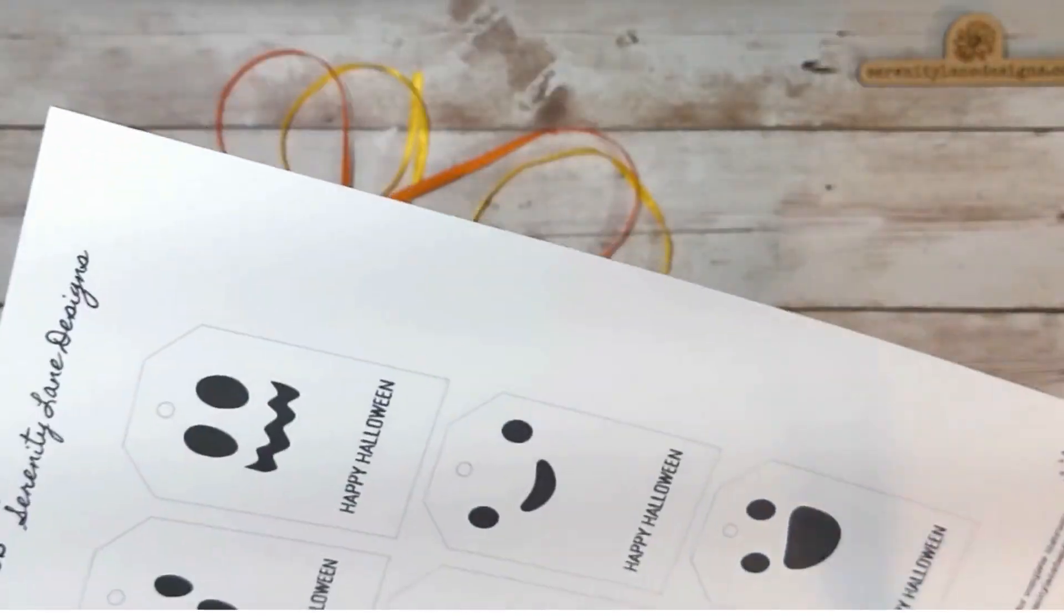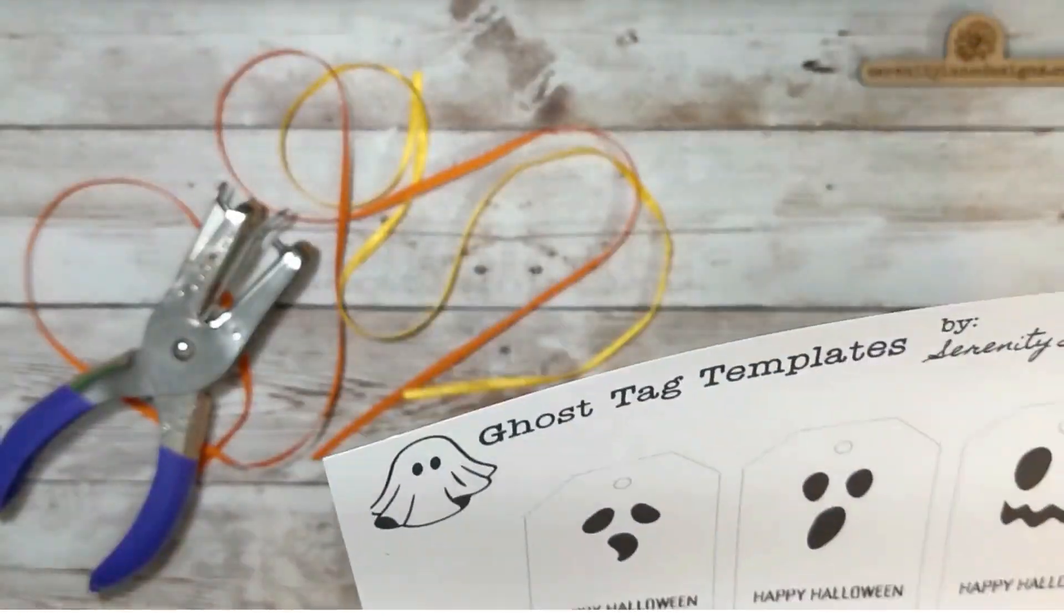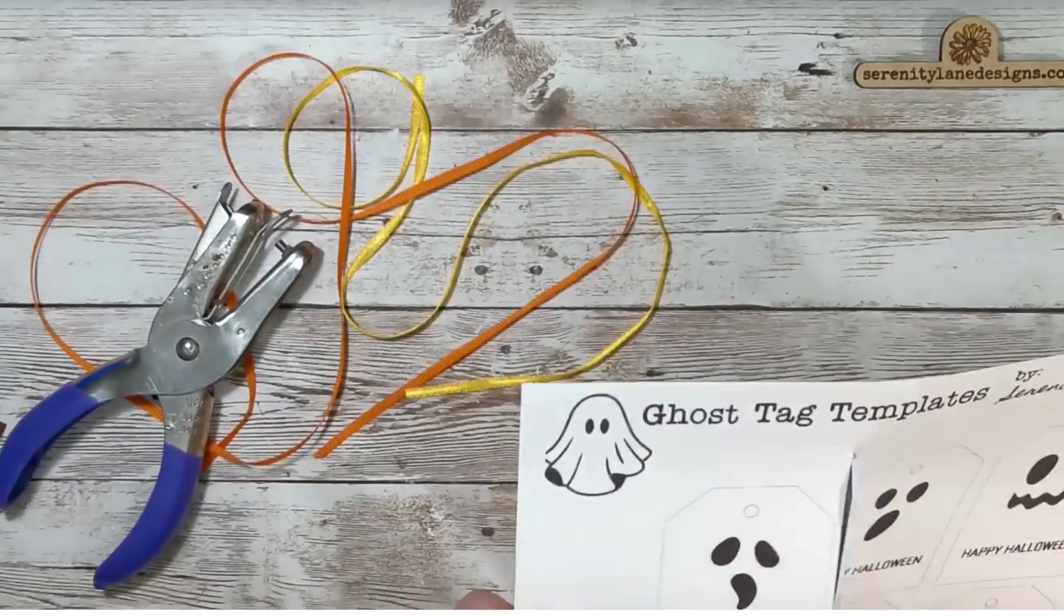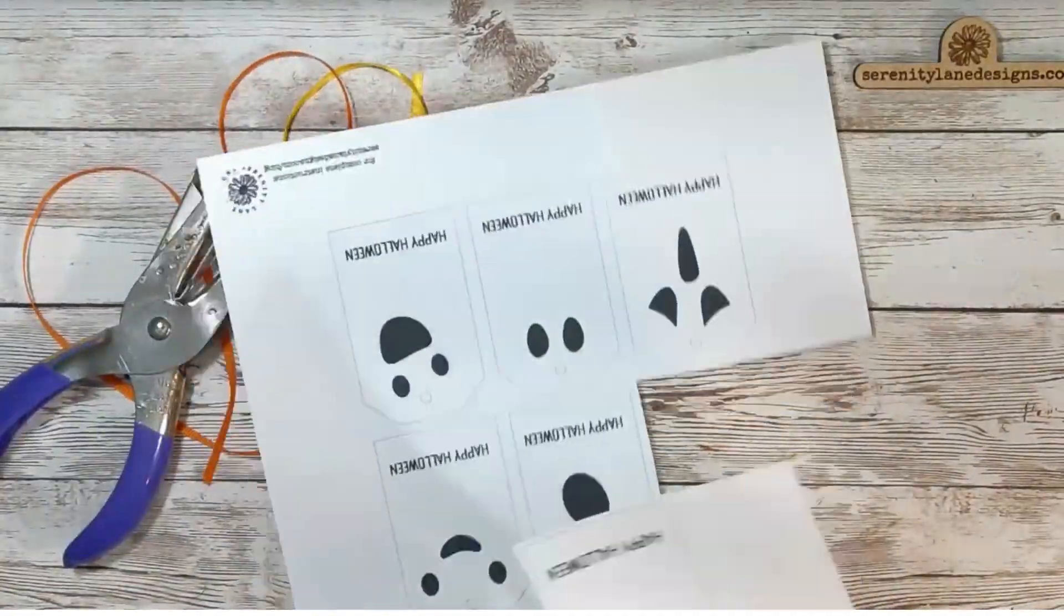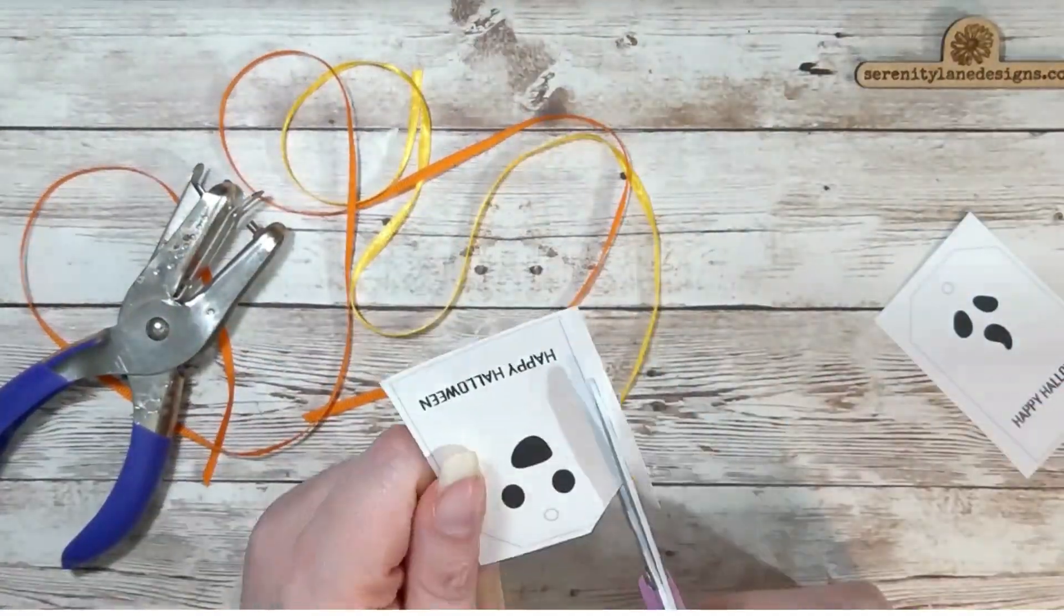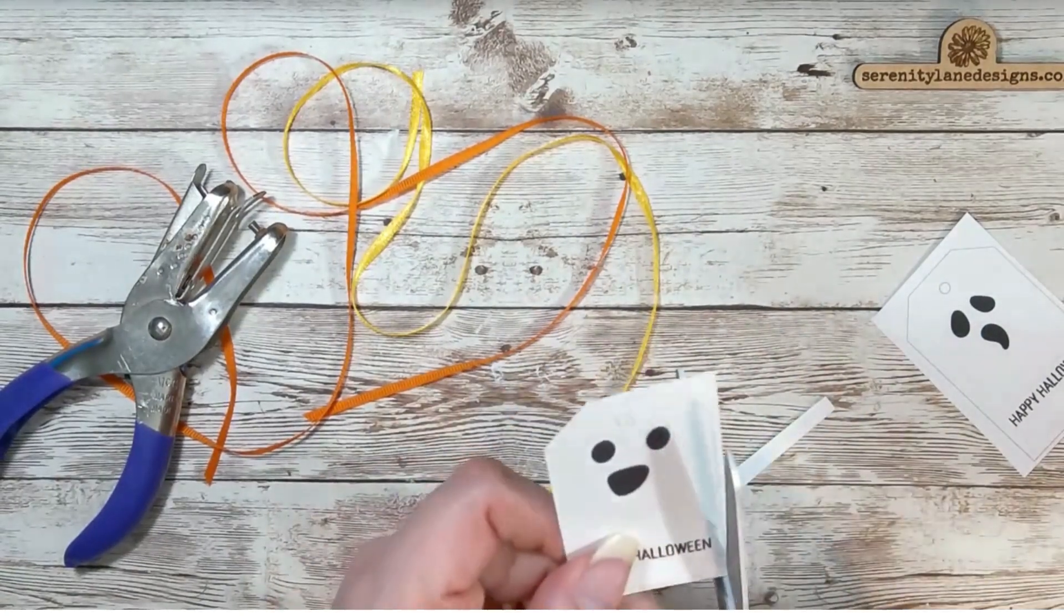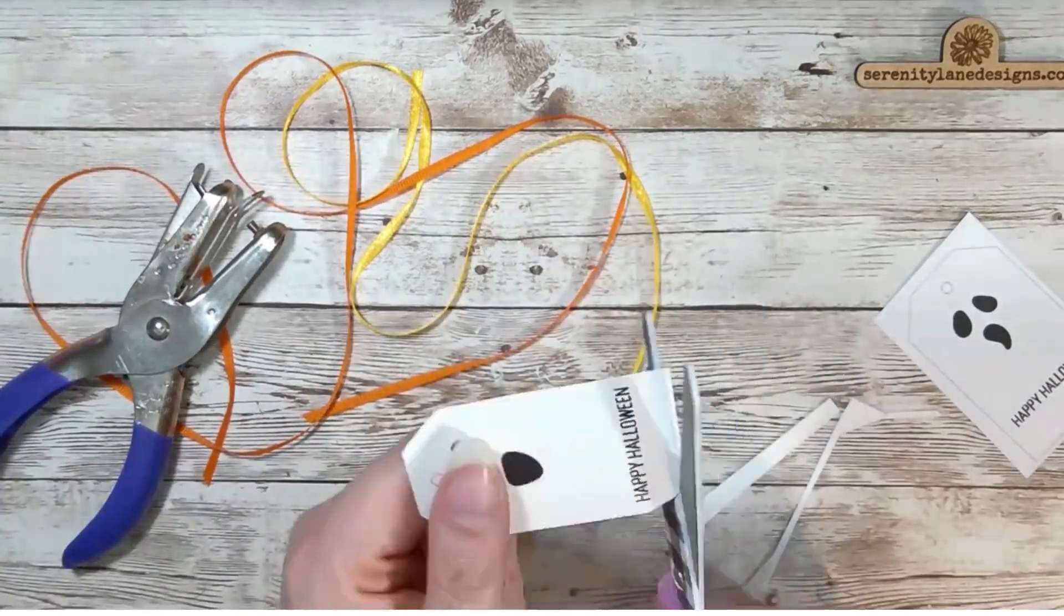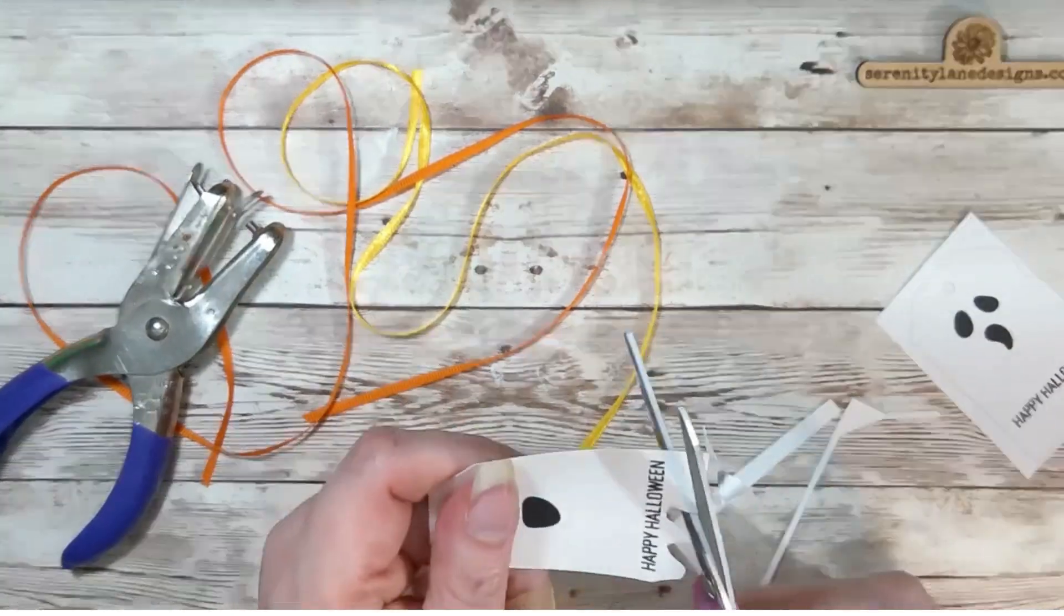Our last project, we're going to make some ghost tags. Here, you're just going to cut out the tags from the template. At the bottom, we're simply going to cut it uneven to give it the ghost look.